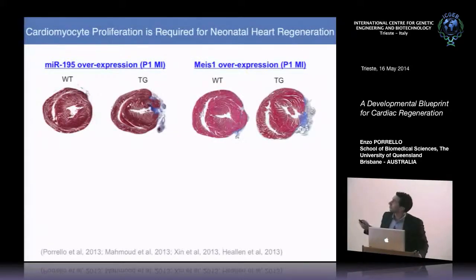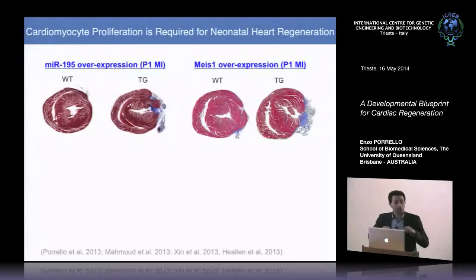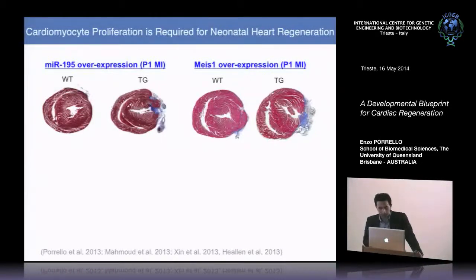Similarly, conditionally overexpressing the transcription factor Meis1, which activates tumor suppressor pathways in cardiomyocytes, is sufficient to repress cardiomyocyte proliferative capacity. This also impairs the regenerative response and is associated with increased scar tissue at day 21 following injury.